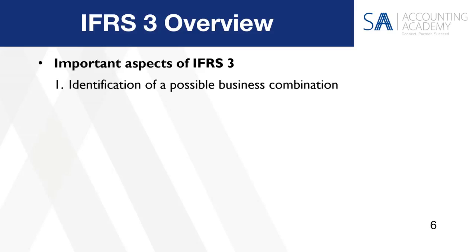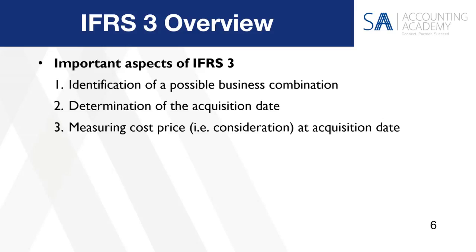We need to understand the types of business combination transactions before we understand how to identify them. Then once we've identified our business combination transaction that qualifies for IFRS 3 to be applied, we need to determine the acquisition date, because the magic of IFRS 3 happens at the acquisition date. Then we're going to be measuring the cost price — that means looking at the consideration that is paid or payable at the acquisition date.